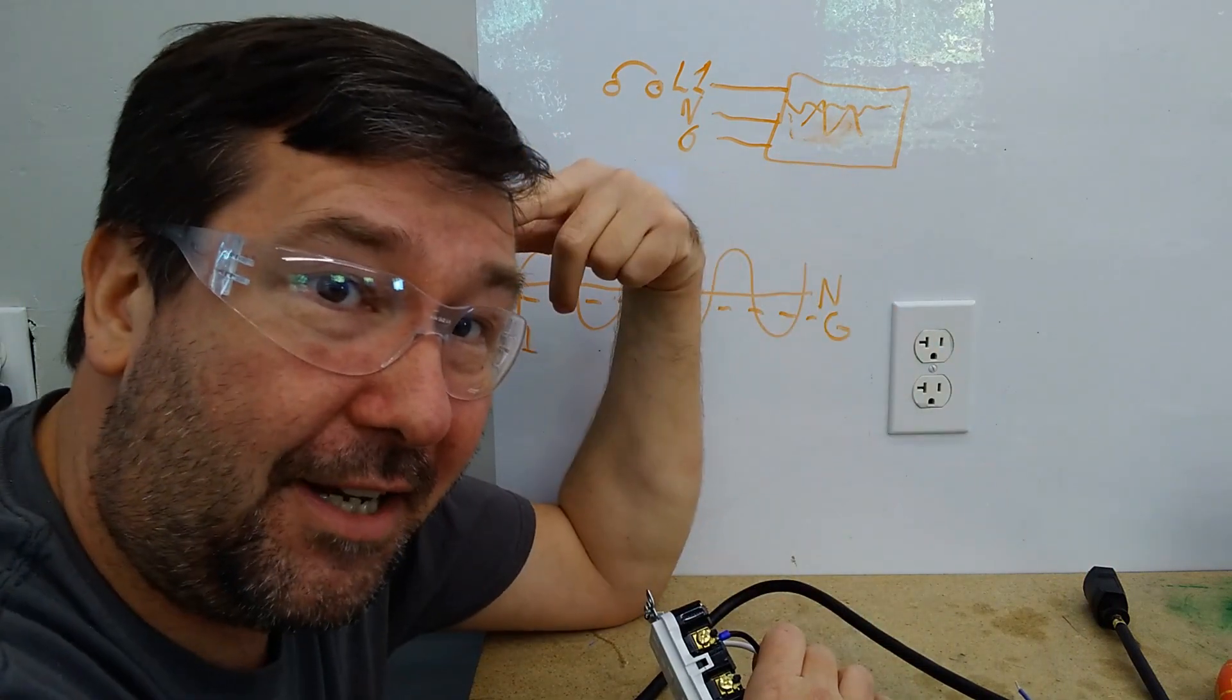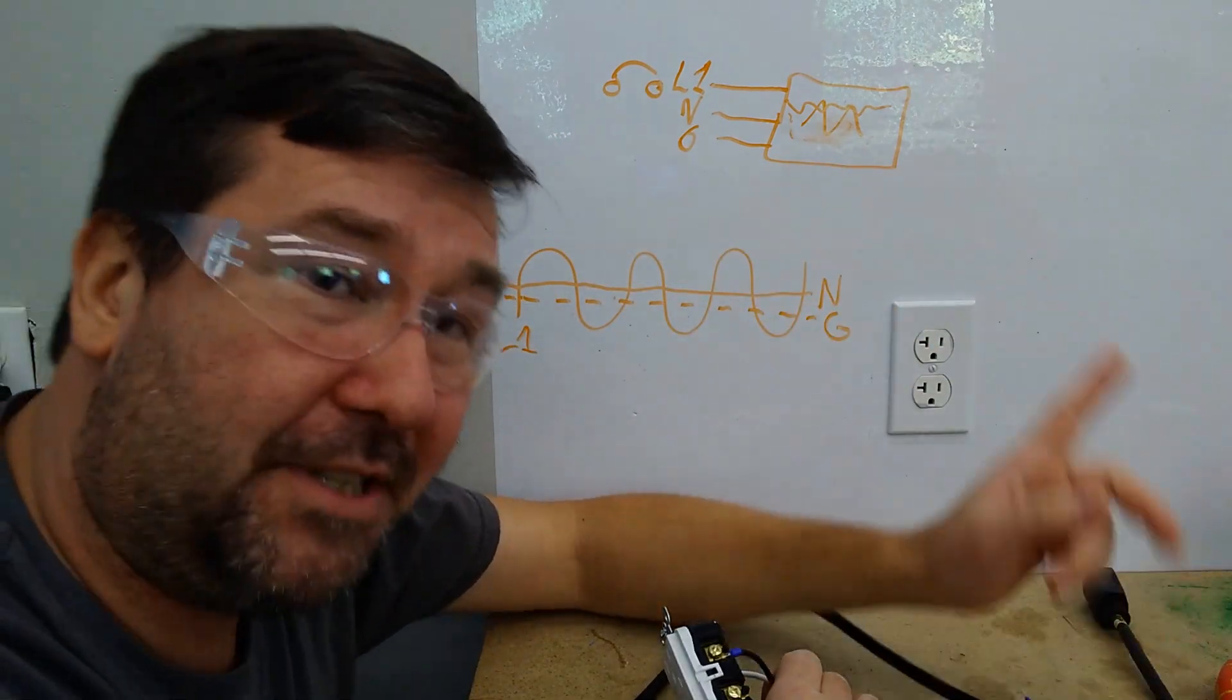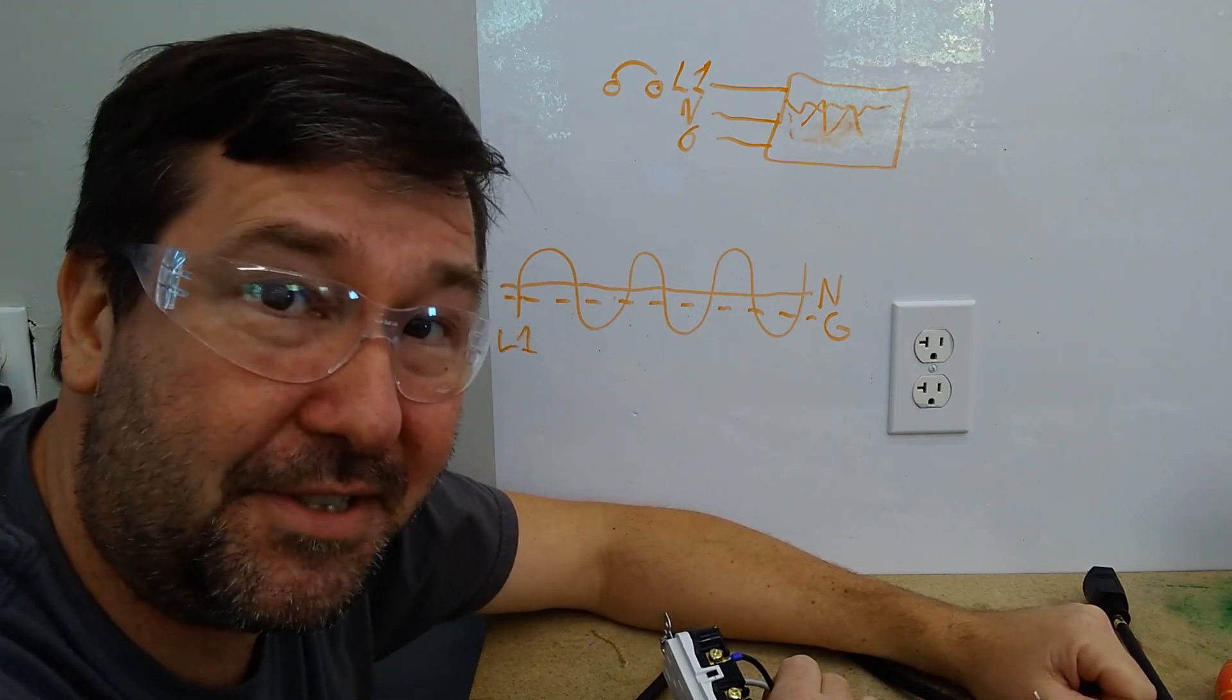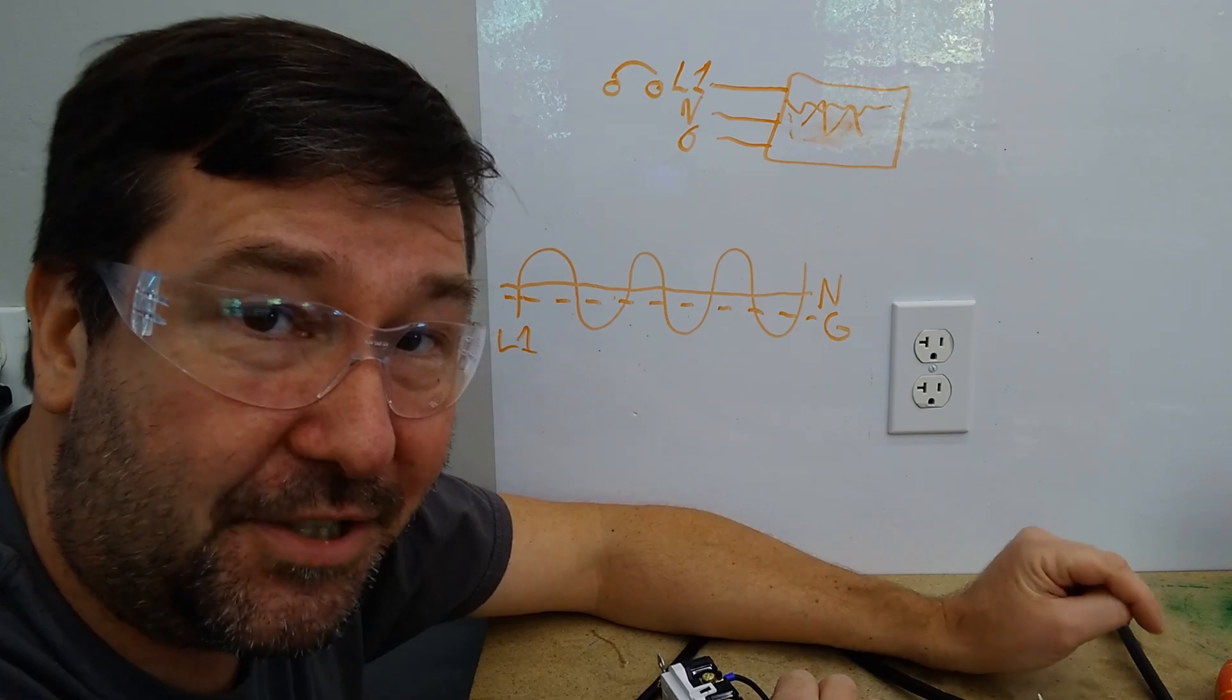So the next thing you're kind of thinking though, if you don't understand that milliamp part is well, we just need to bypass that GFCI up there. Well, you have more than five milliamps of leakage current.